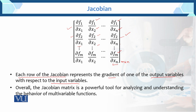Each row of the Jacobian represents the gradient of one of the output variables with respect to the input variables. Ab har row Jacobian ki jo hai, wu represent karti hai gradient. Gradient kya hai? Abhi aapko pata hai, slope of a line hai. Of the output variable with respect to the input variable. Overall, the Jacobian matrix is a powerful tool for analyzing and understanding the behavior of multi-variable functions.